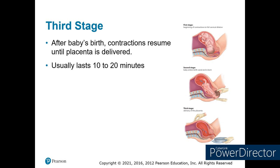The third stage of labor is delivery of the placenta. After the baby is delivered, mom will relax briefly, then begin contractions again as the uterus expels the placenta, starting to break away those capillaries from the uterine wall. The placenta is delivered 10 to 15 minutes after birth. Once delivered, we need to help contract the uterus — moms naturally release Pitocin post-delivery, but we can also encourage nursing or perform a fundal massage.